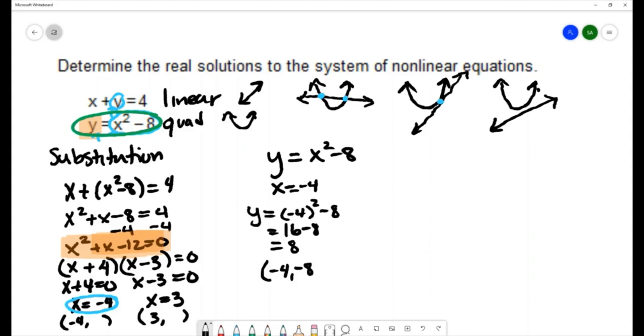Let's find the other one. Now we'll use x equals 3. Y equals 3 squared minus 8 which is 9 minus 8 and that's 1, so the other solution would be 3, 1.